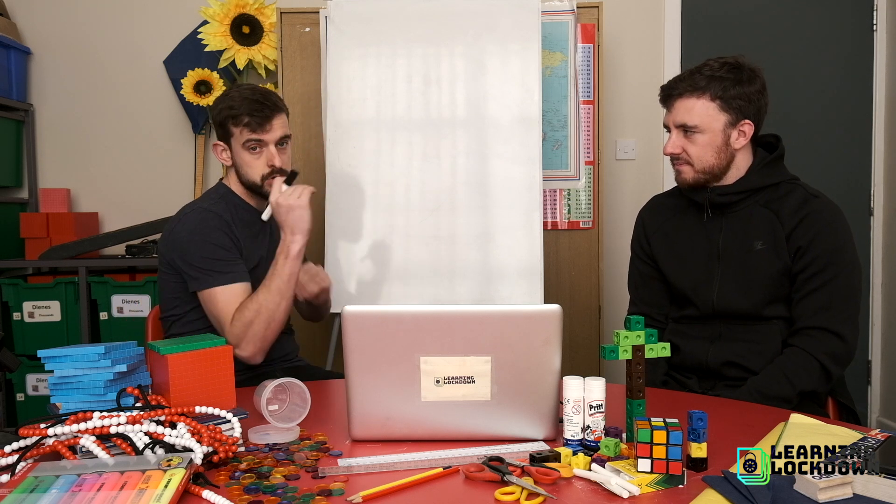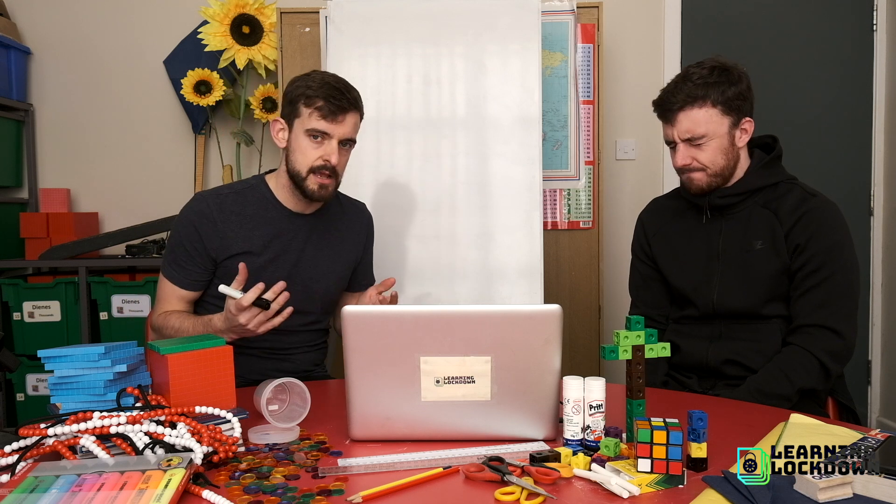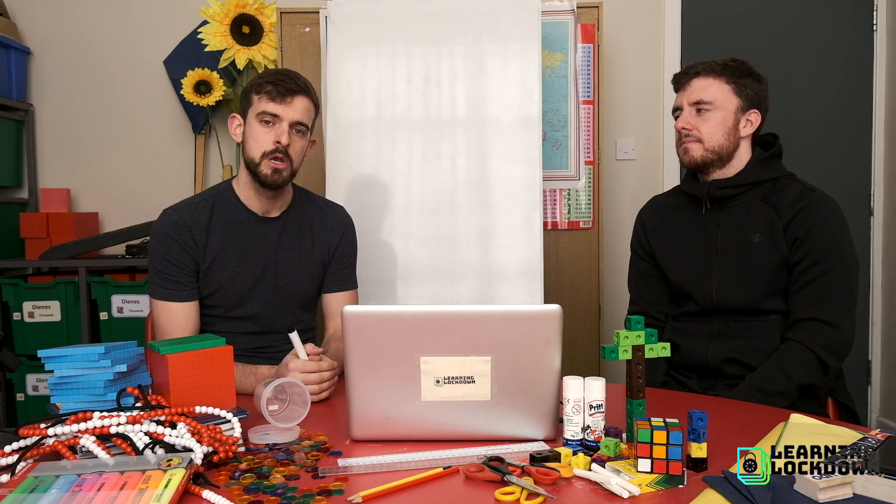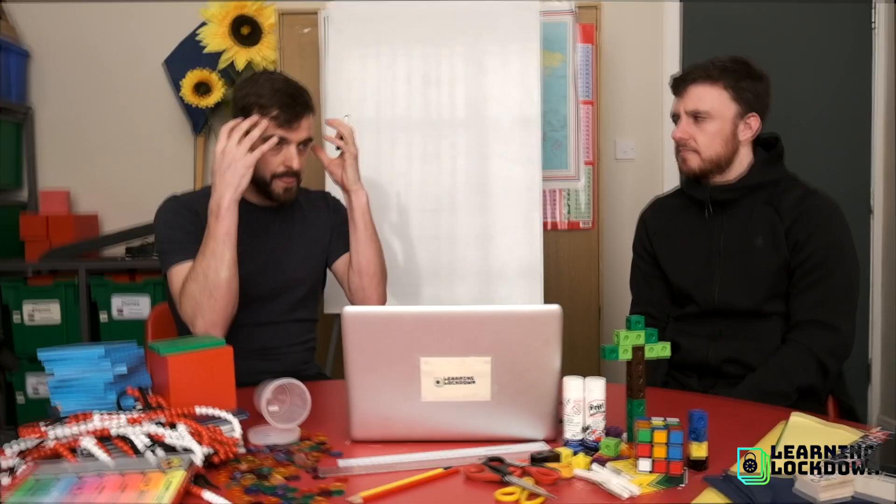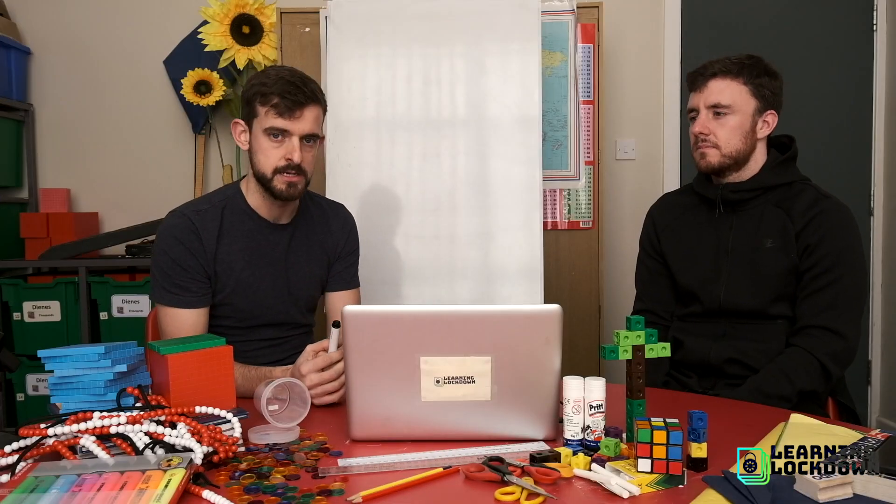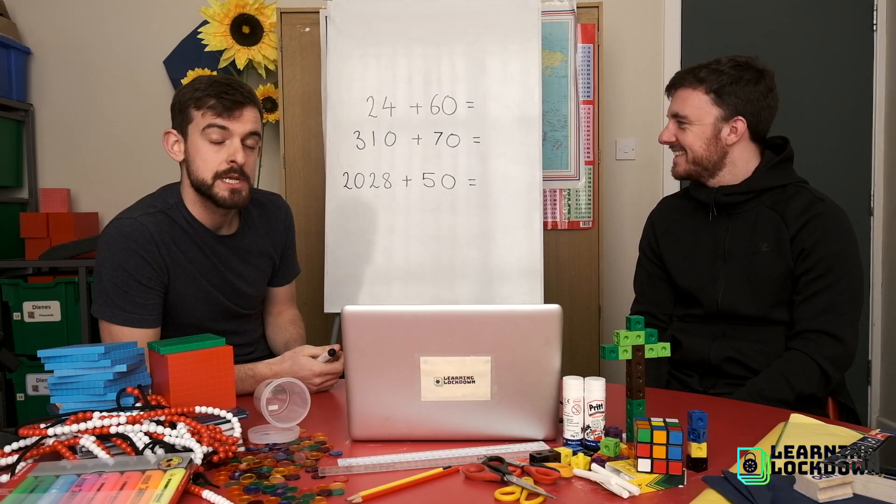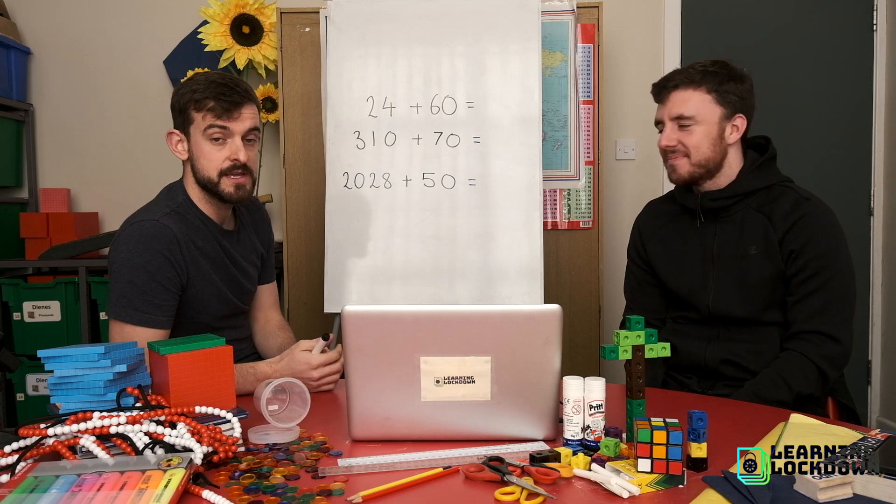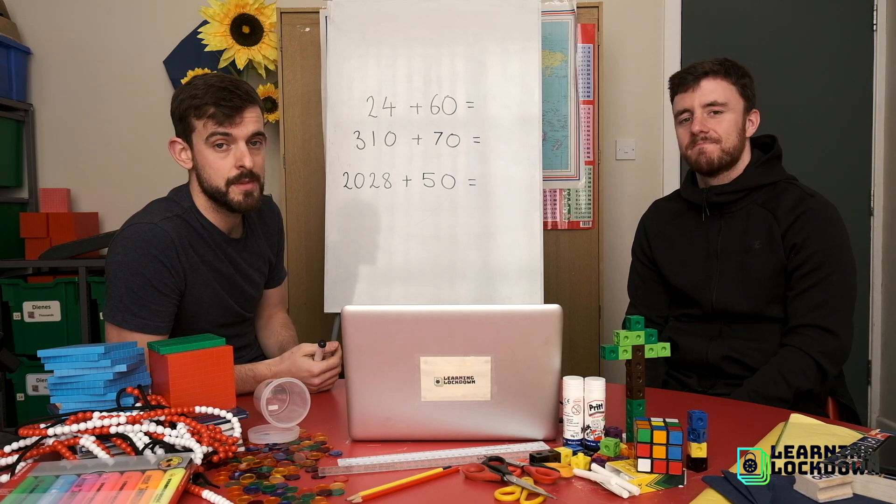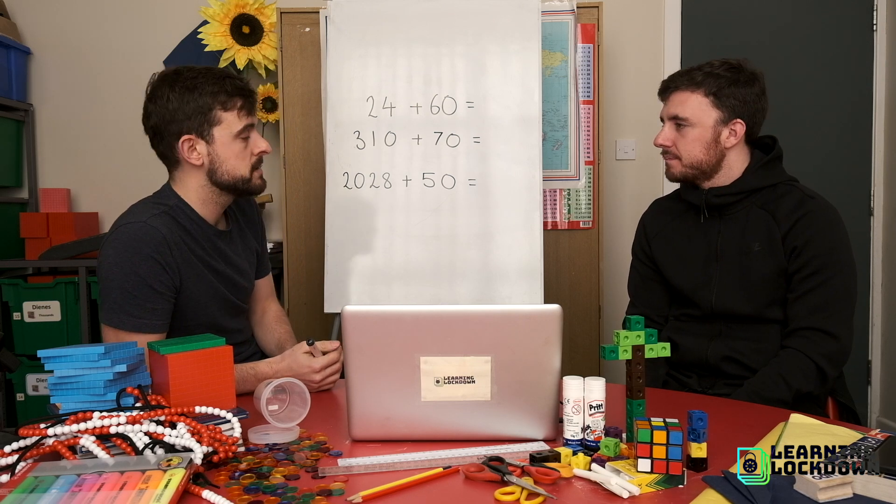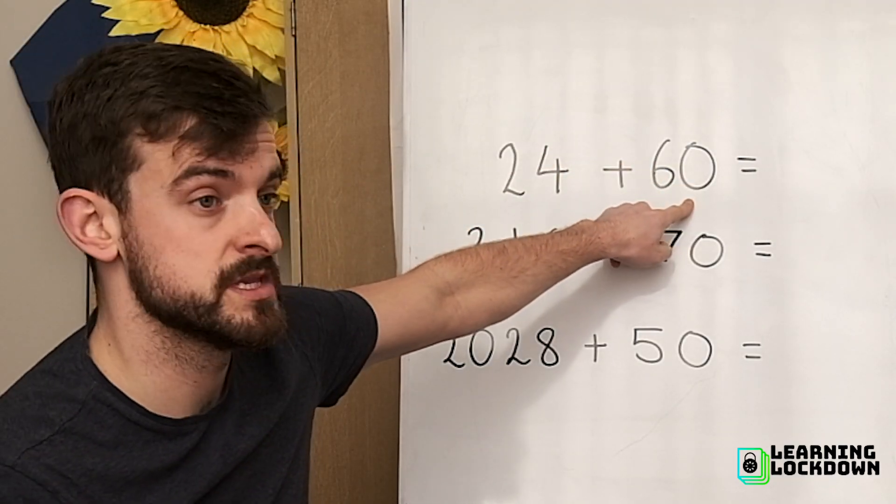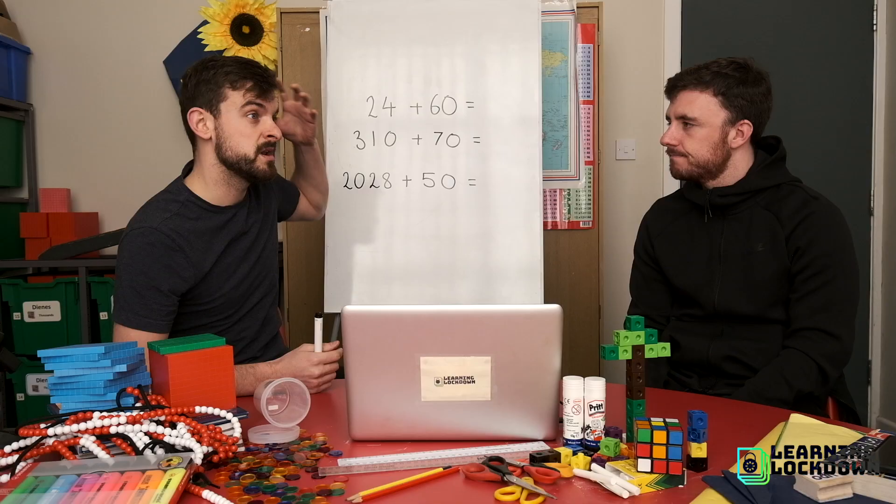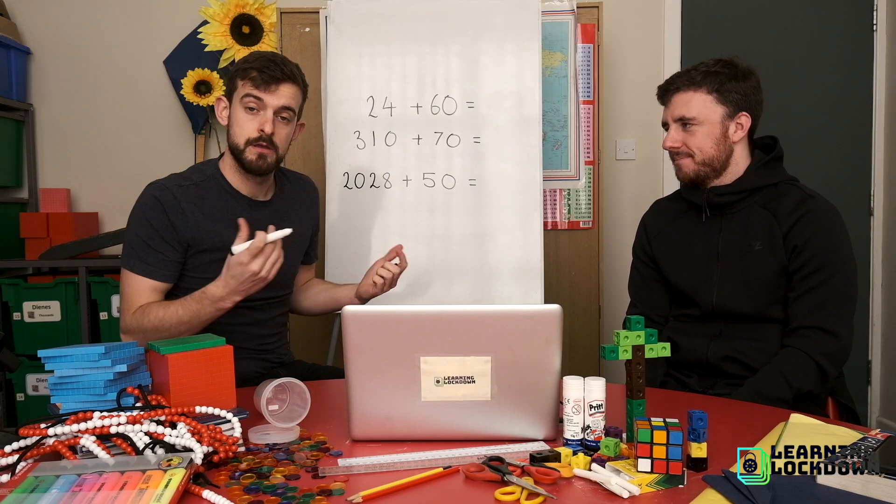We're going to start first of all with some nice easy numbers. We're going to show you three sums on the board which will not need any formal written method, will only need the mental capacity of your mind. Have a look at these sums now. We don't need to use any formal method for these because we can work these out just in our minds as long as we know our number bonds. So here we can see in our ones column we've got four ones here and zero ones there. So if we start there in our head we know zero add four is four.